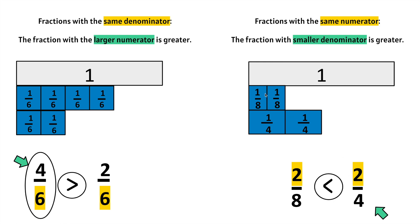So we have 2/8, and 8ths are smaller. And then we have 2/4, but we know 4ths are bigger than 8ths. So remember: same denominator, we look at the numerator. And if you have the same numerator, then you look at the denominator — whatever denominator is smaller is actually the greater fraction. 4ths are bigger or greater than 8ths.